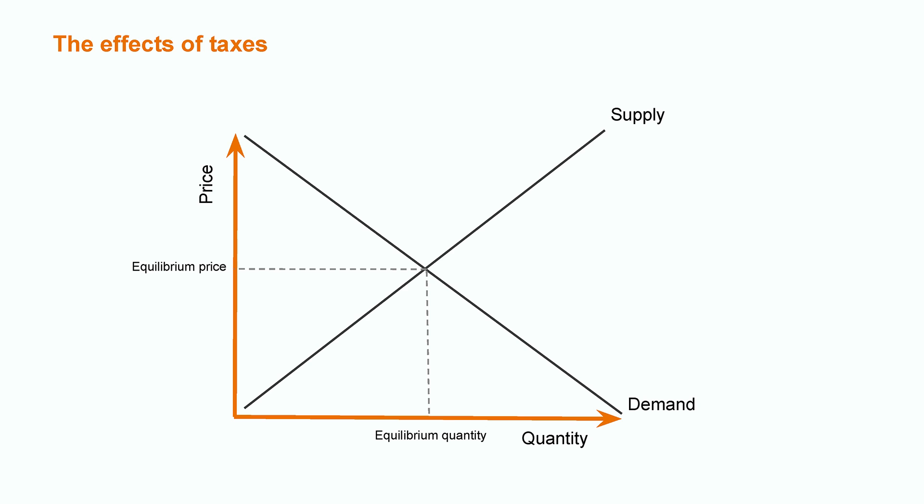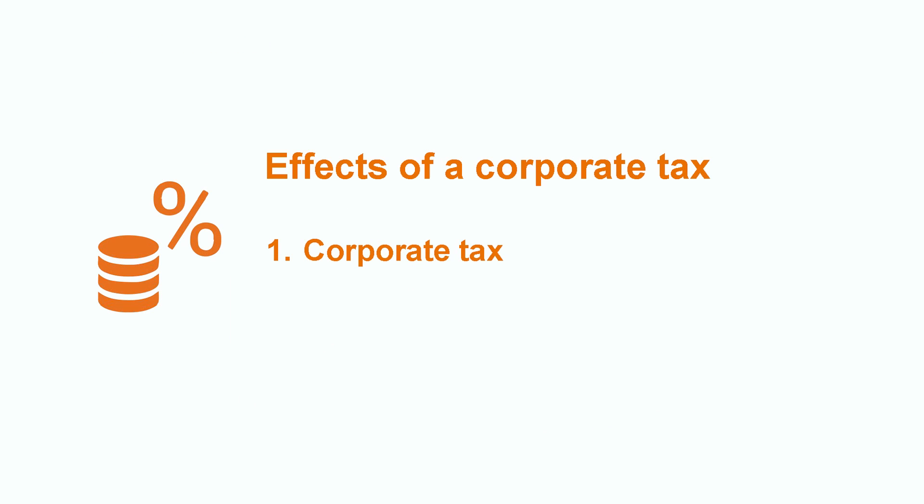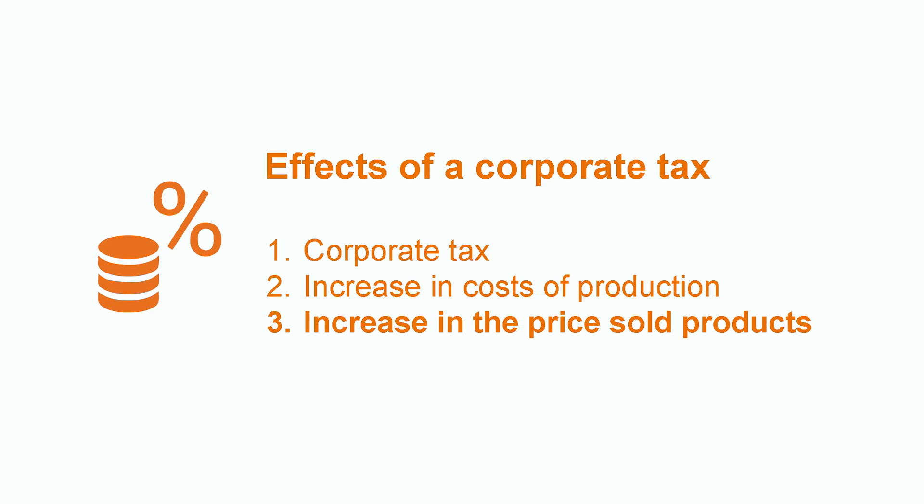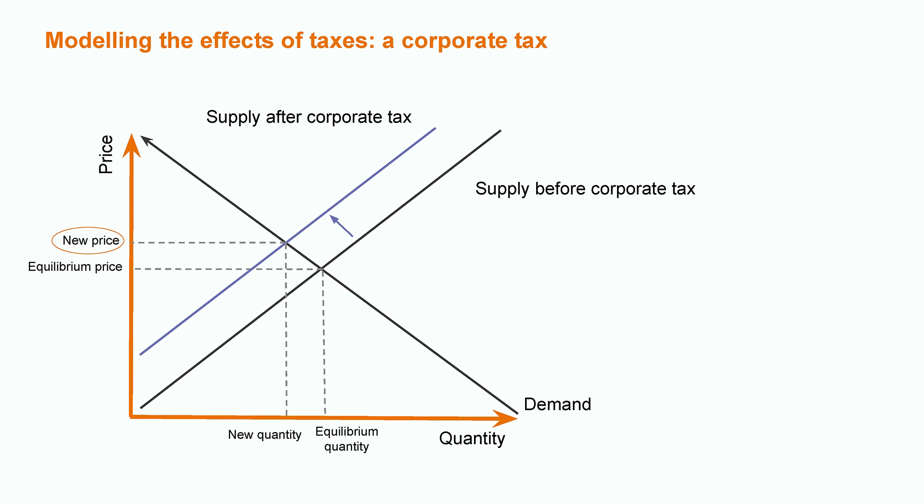Let's analyze the effects of taxes. Consider a market where the firm now pays a corporate tax. In order to retain the same final revenues as before, its costs of production will increase. To recoup those increased production costs, the producer will have to increase its prices. The firm sells at higher prices, has more revenues, and can pay corporate taxes to the state. As the price of products sold increases, this shifts the supply curve up. The new price is higher and the new quantity sold is lower.